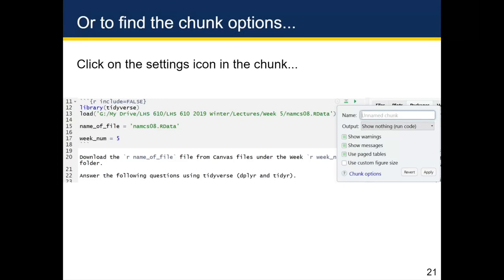You can change these settings for every individual code chunk. For the purposes of this class, you'll edit each code chunk to not show your code but have your code run — except for the first chunk, where you should show nothing and run the code. So the first chunk will be include equals false, and all remaining chunks will be echo equals false.